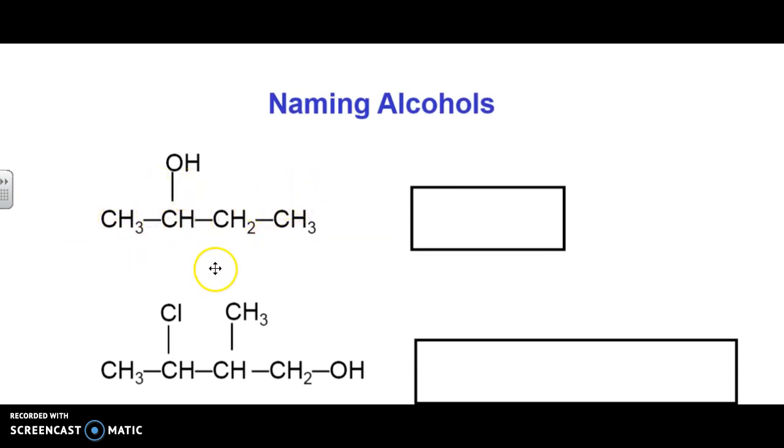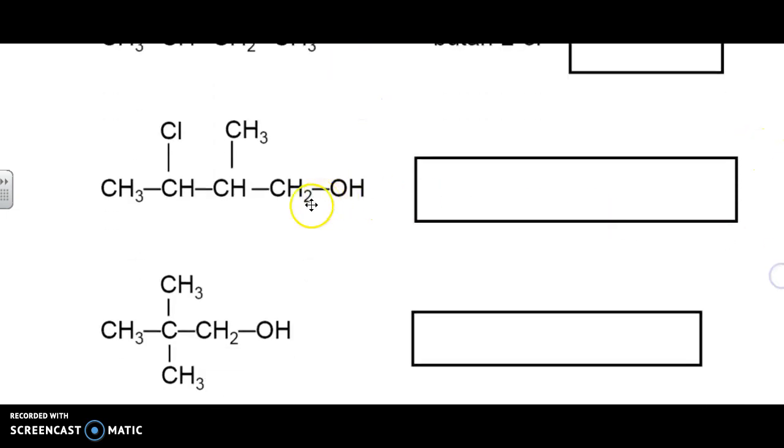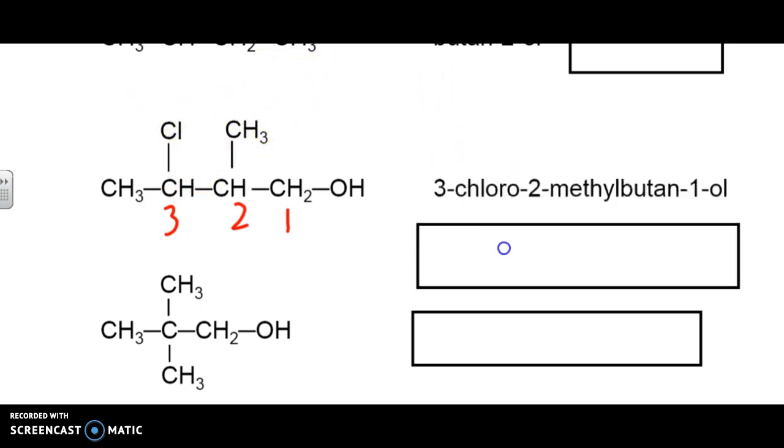In this particular case right here, we have a four-carbon chain, so it's a butane. The alcohol is at spot two, so, therefore, it's butan-2-ol. In this particular case here, we've got an alcohol at spot one. We have our methyl group at spot two, and we have our chloro group at spot three. The chlorine is going to come before methyl. So, therefore, this becomes 3-chloro-2-methyl-butan-1-ol.